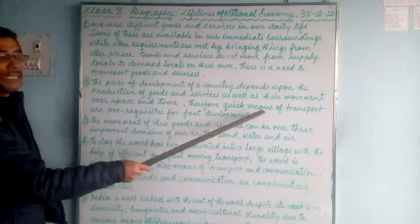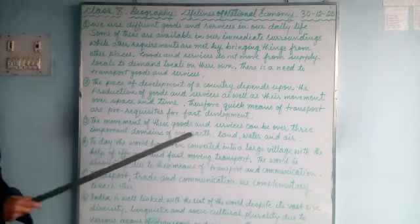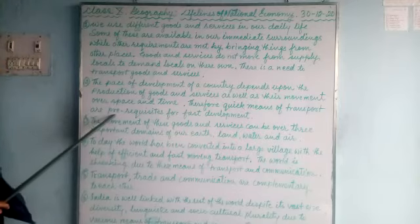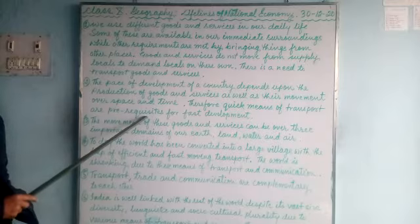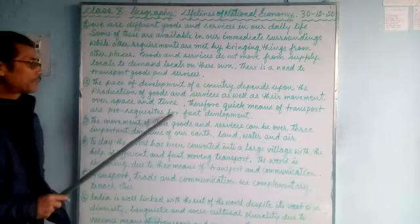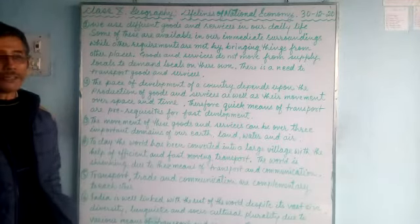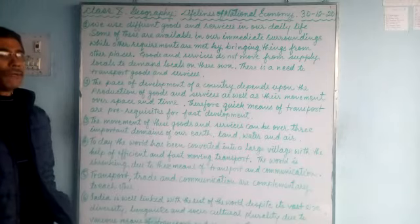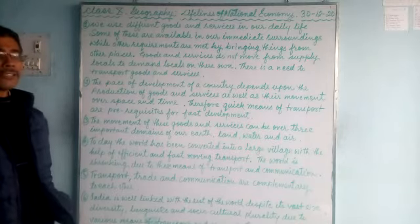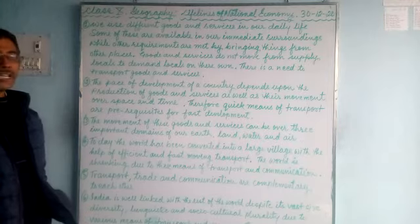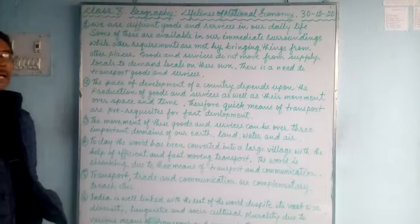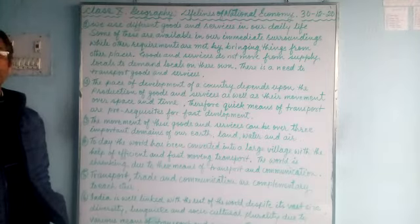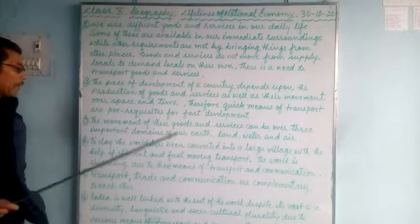That's why the government is setting up fast-moving transportation systems with good road and railway networks. The pace of development of a country depends largely upon the production of goods and services as well as their efficient movement from one area to another. Therefore, efficient means of transport are prerequisites — meaning they are necessary — for the fast development of a country.